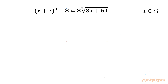Welcome back to Infigyan, my dear friends. In this video we have another very interesting question from Radical Equations. The equation is (x + 7)³ - 8 = 8 times the cube root of (8x + 64), and we are going to find out all real solutions.